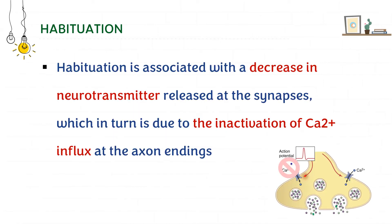In habituation, there is a decrease in neurotransmitter released at the synapses, which in turn is due to the inactivation of calcium influx at the axon endings. So there is less calcium. Naturally there will be a lesser number of neurotransmitters, so lesser response. That is what is meant by habituation.